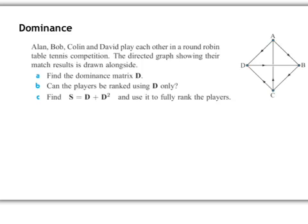So this next question relates to dominance. So here we have Alan, Bob, Colin, and David play each other in a round-robin table tennis competition. The directed graph showing their match results is drawn alongside. So here we can see Alan has beaten David, and Colin has beaten Alan, Alan has beaten Bob. So the direction of the arrow shows who has defeated who.